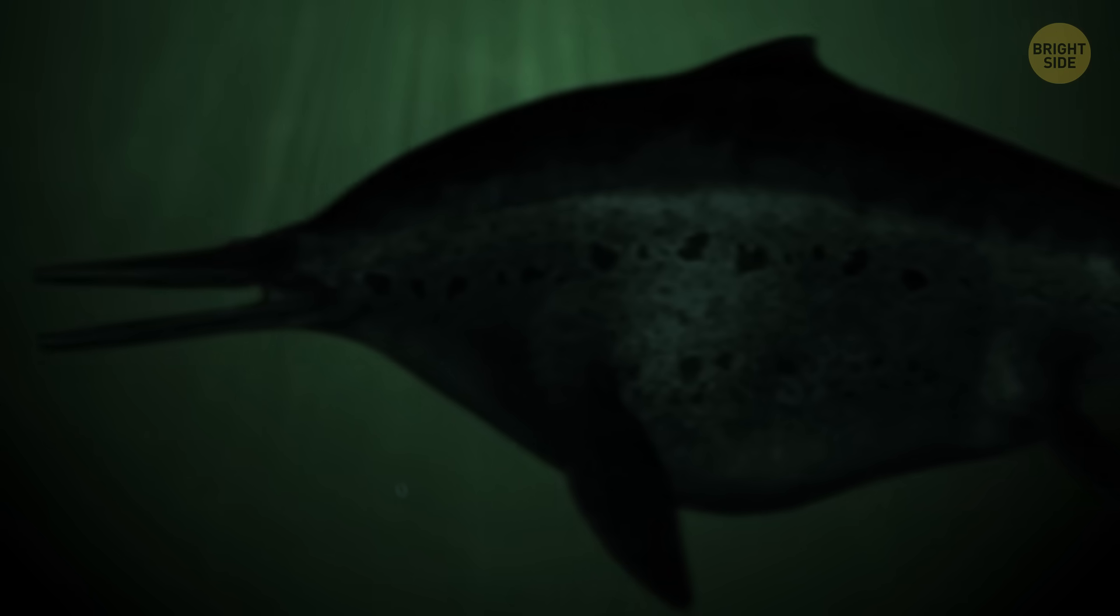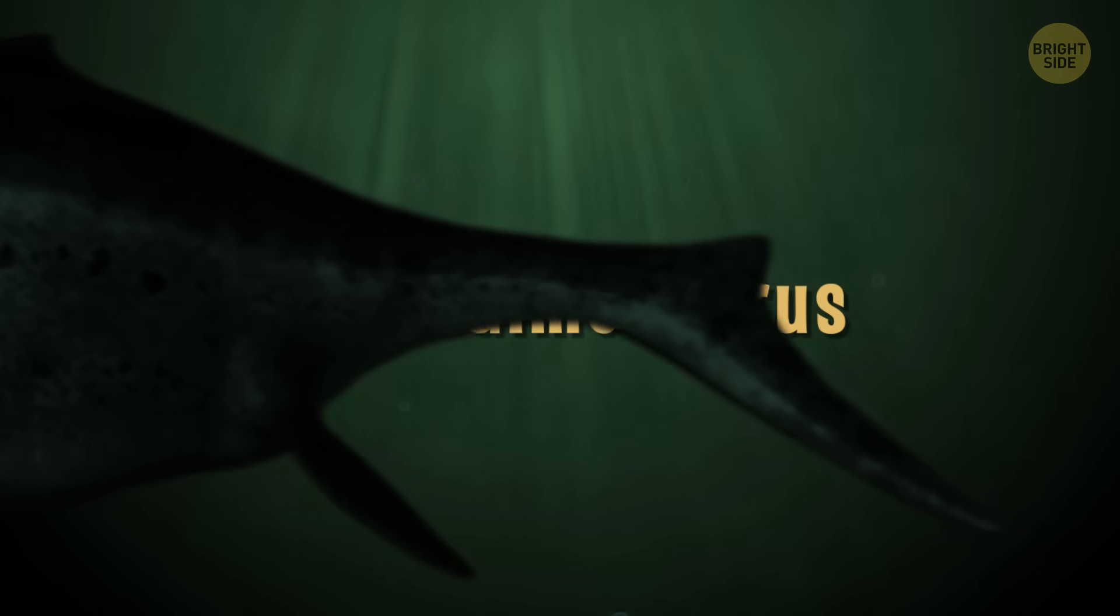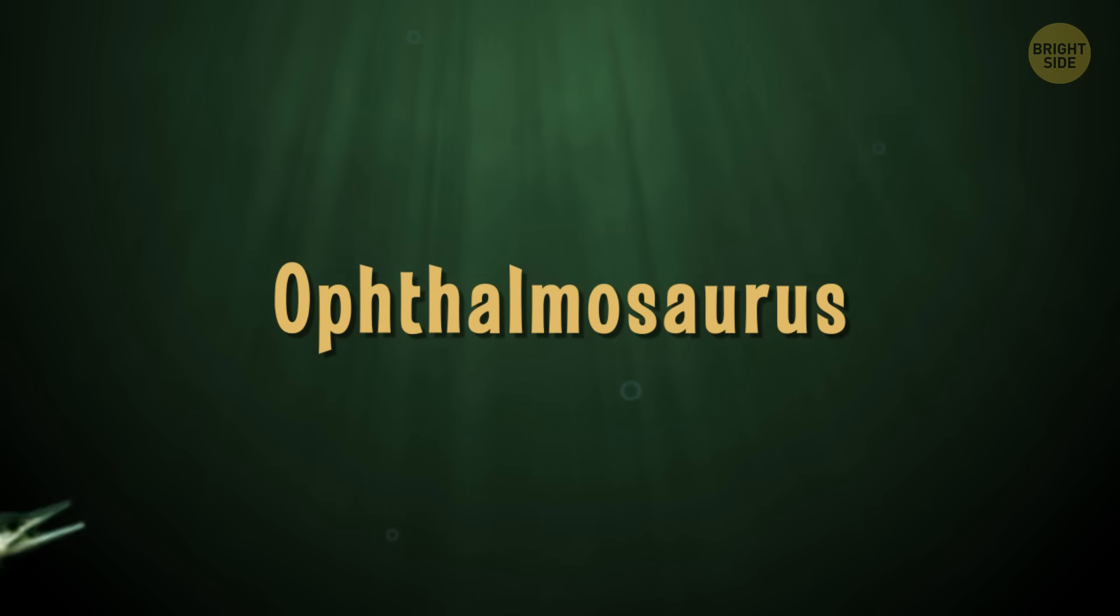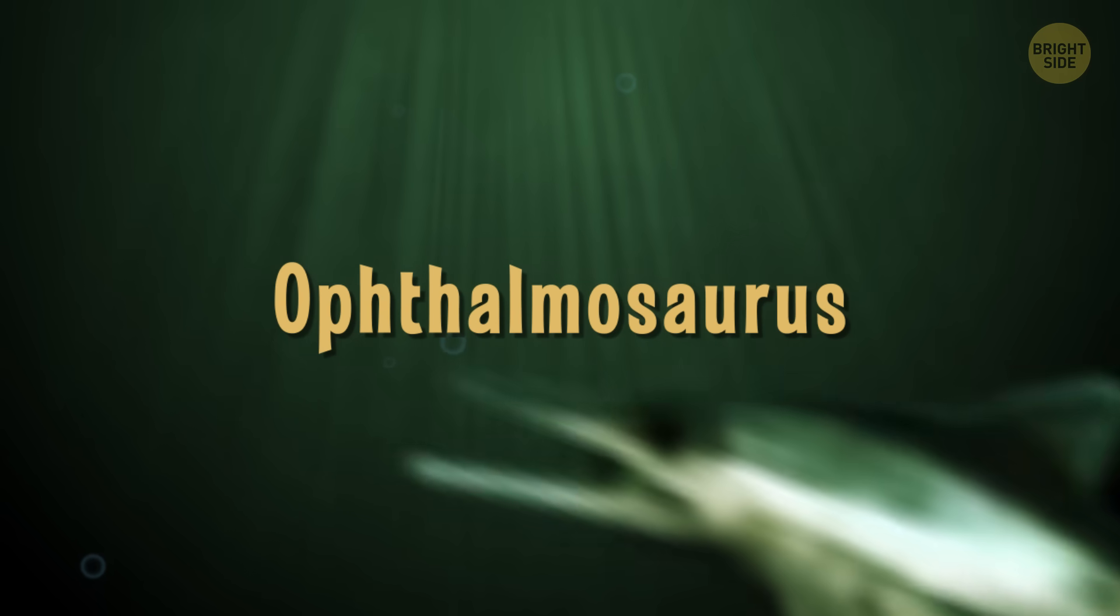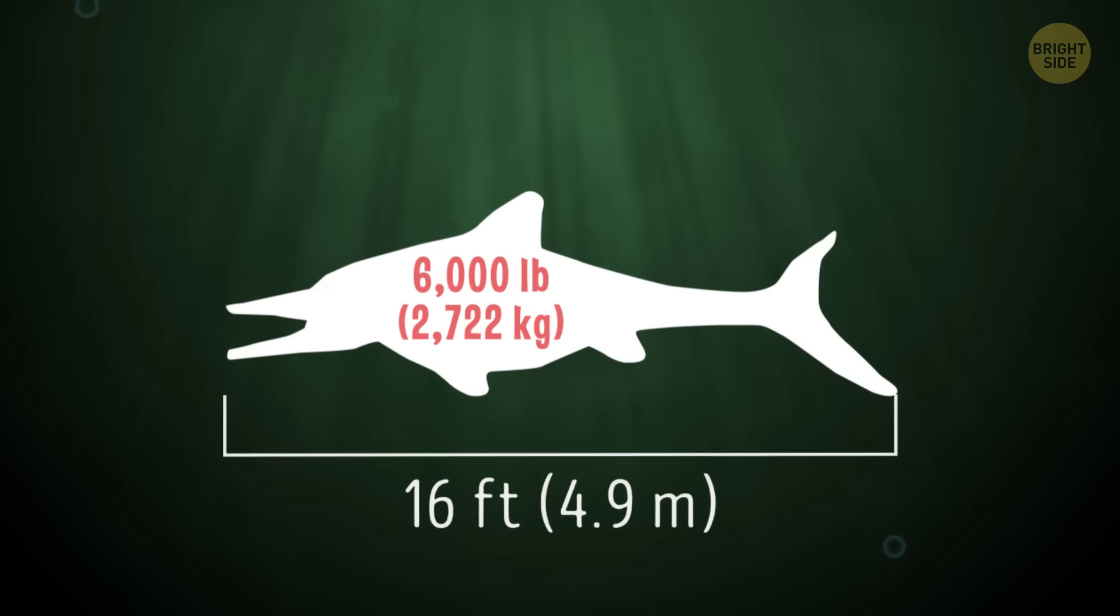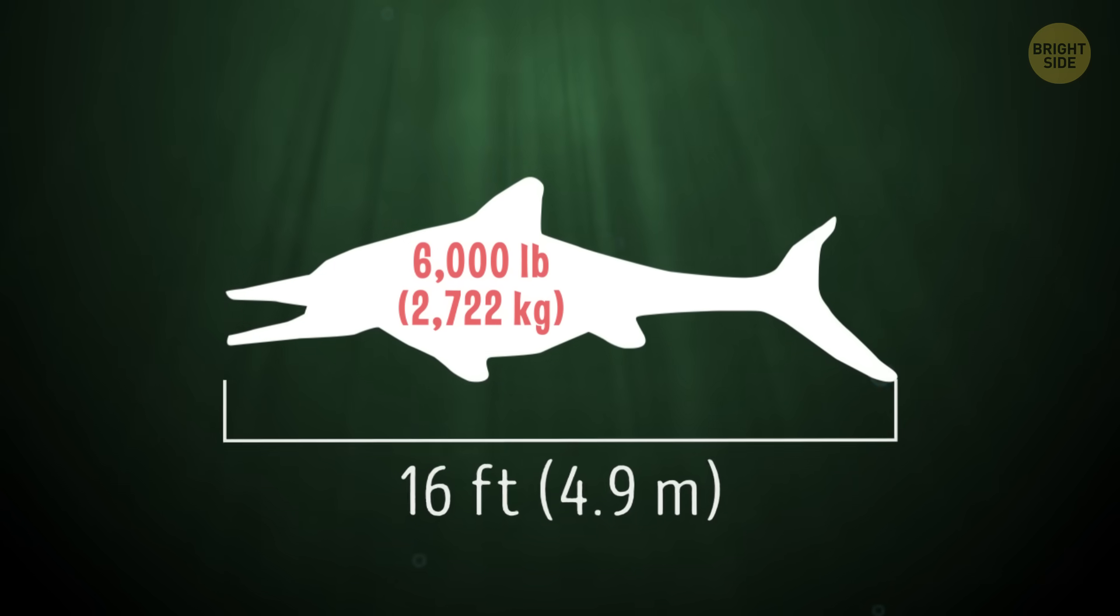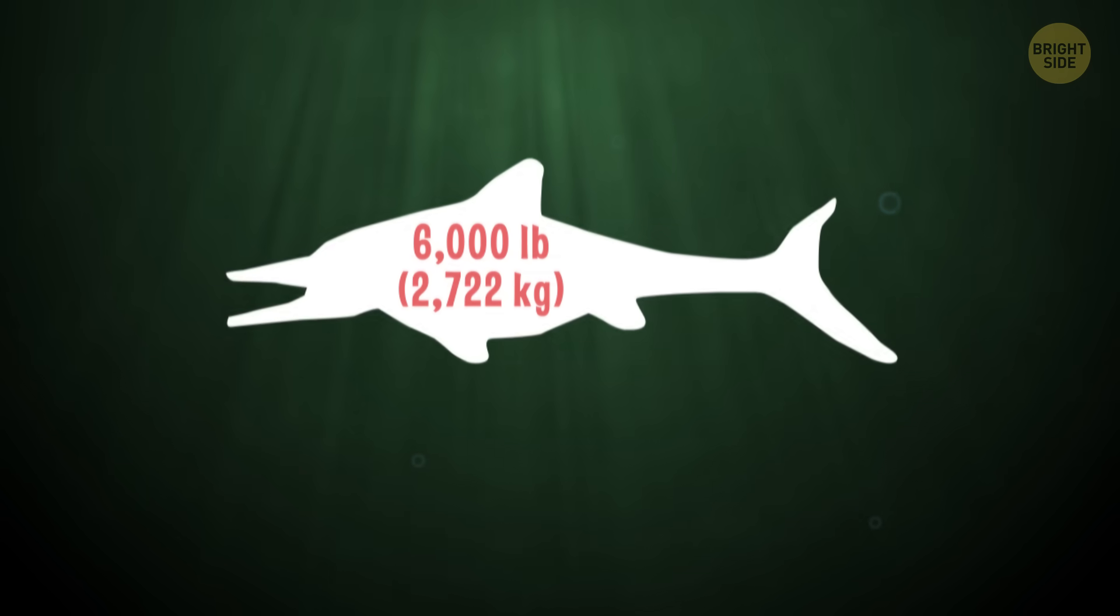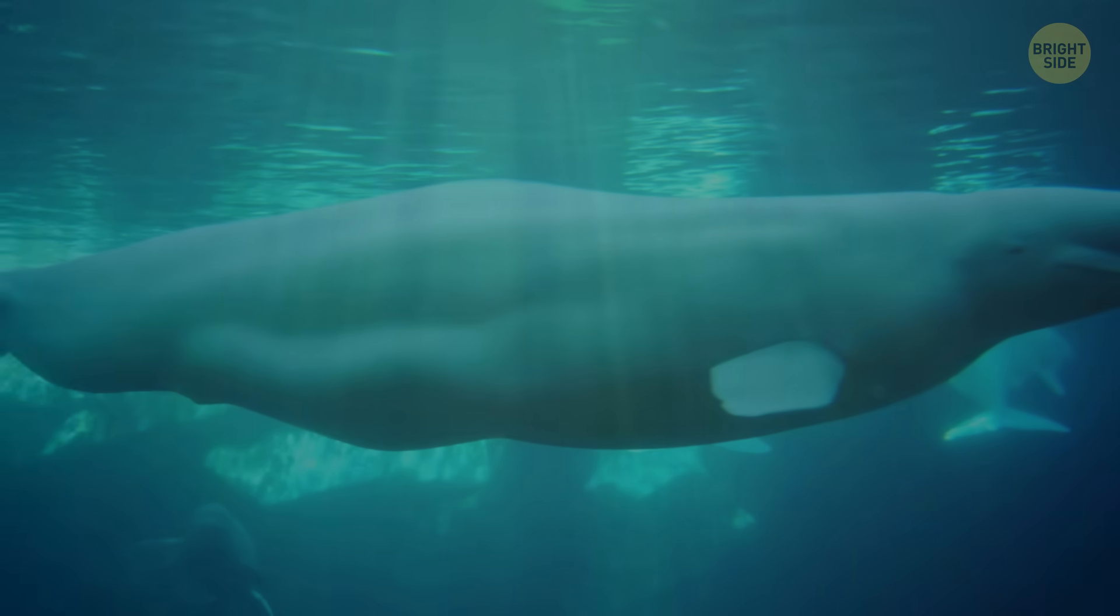But not all marine reptiles were massive like the Shonisaurus. Meet Opthalmosaurus. This prehistoric reptile thrived during the late Jurassic period and lived in oceans all over the world. Opthalmosaurus weighed somewhere around 6,000 pounds and grew to approximately 16 feet long, according to NewDinosaurs.com. That's about the same length as the beluga whale that exists today.